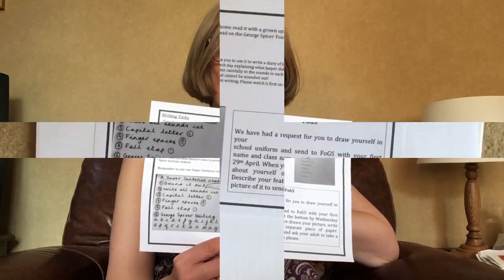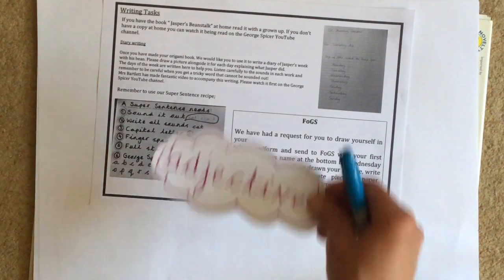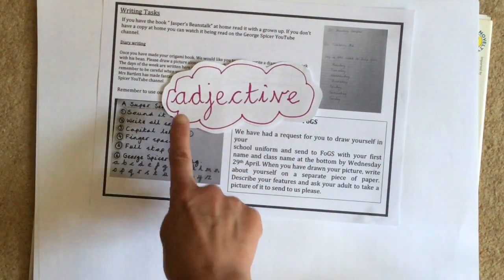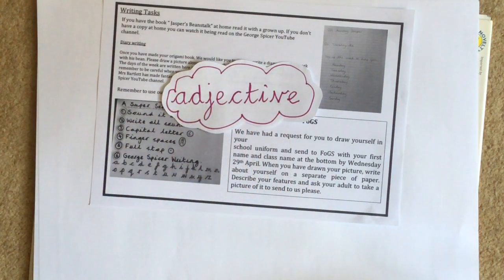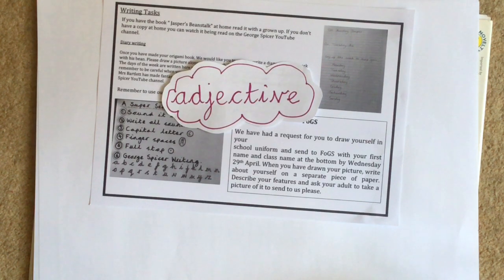When we describe ourselves, we need to use lots of describing words. There's a special word that we're going to talk about today — it's called an adjective. That's a type of word that tells us more about something. It might tell us what it looks like, what colour it is, what shape it is. Lots of different words can be adjectives. So I'm going to write some sentences with some adjectives now.